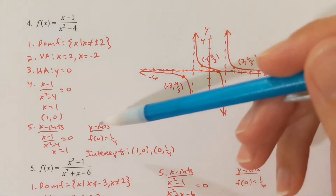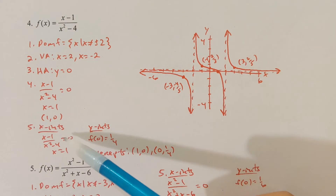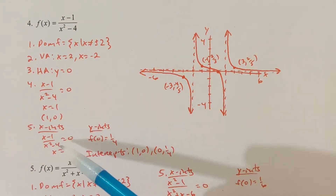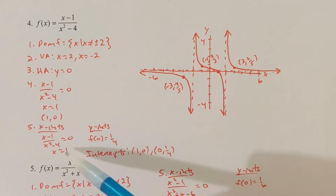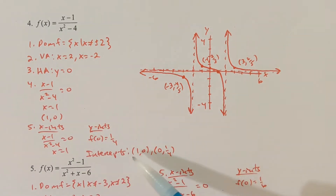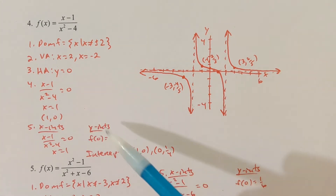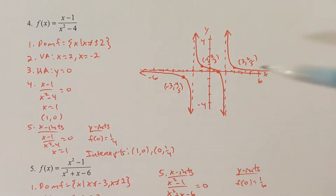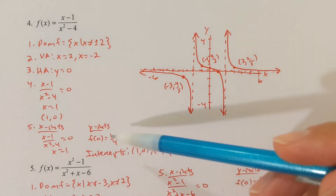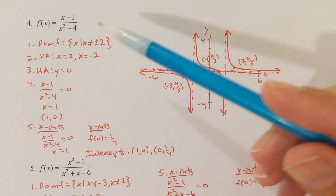The intercepts: the x-intercept is at x equals 1. You set the function equal to 0 and get x equals 1, so (1, 0). That point (1, 0) is actually where we cross the asymptote — it's also an intercept.